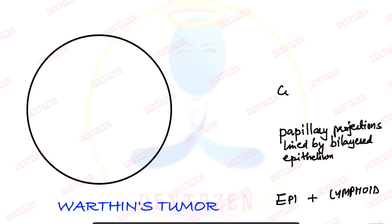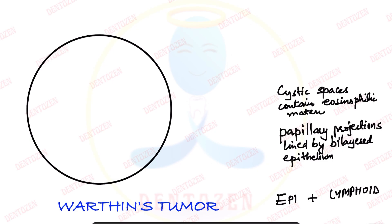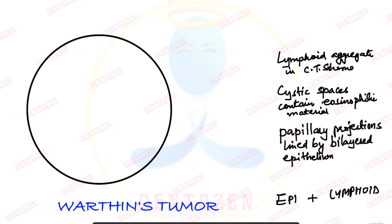These papillary projections open into cystic spaces. The cystic spaces contain eosinophilic material — pink material. The second component is the lymphoid aggregate, which is seen in the connective tissue stroma. Let's see these features one by one.